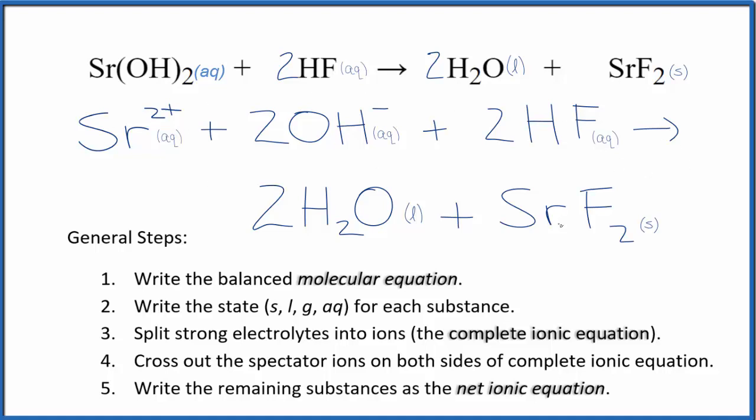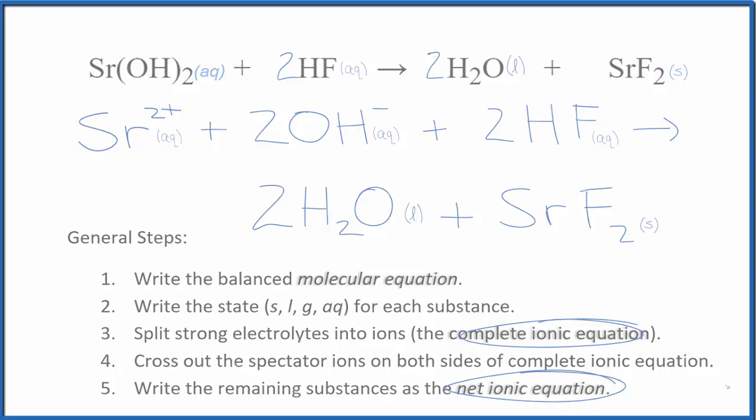So because everything's different on both sides, there aren't any spectator ions. This is both the complete and the net ionic equation for Sr(OH)2 plus HF. This is Dr. V, and thanks for watching.